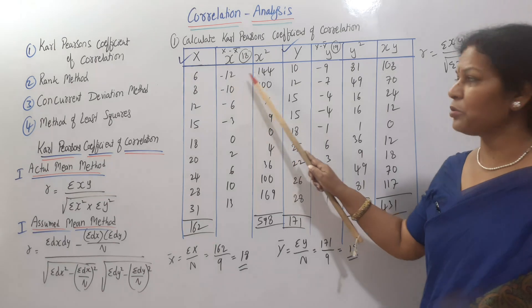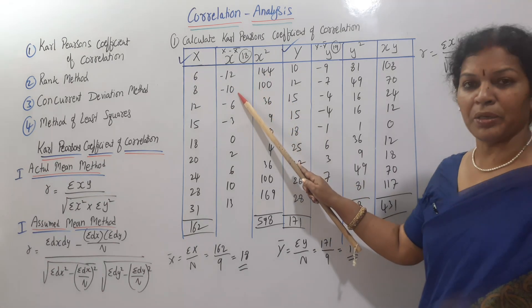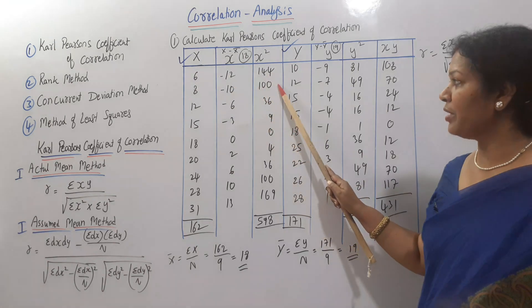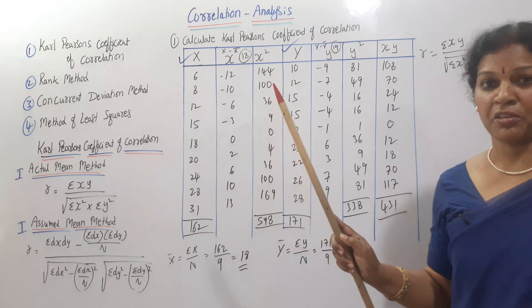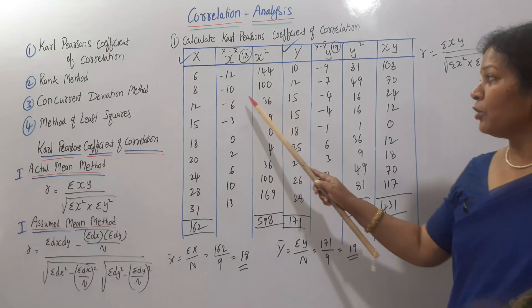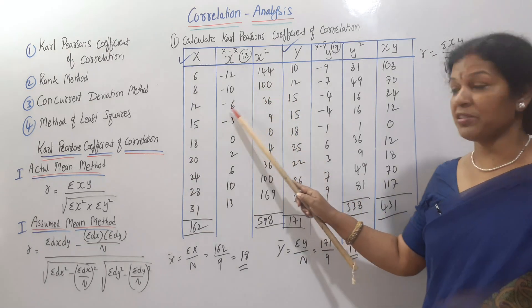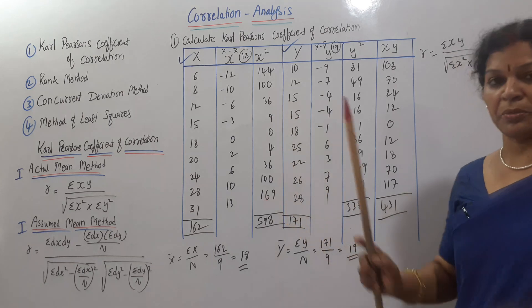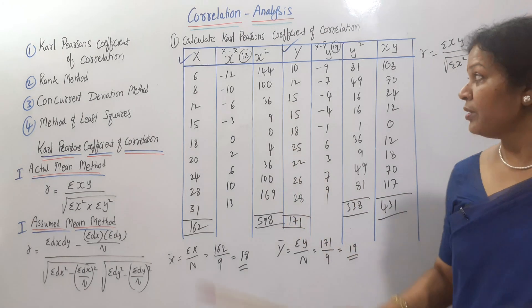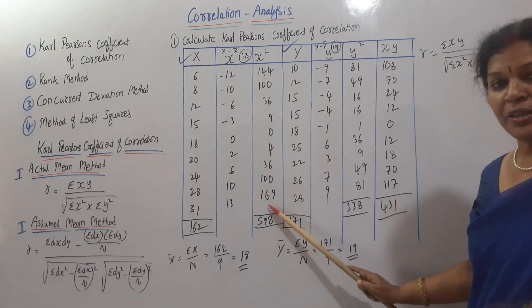Now we compute x squared. We square each small x value: minus 12 times minus 12 is 144; minus 10 times minus 10 is 100. The total of sigma x squared comes to 598.